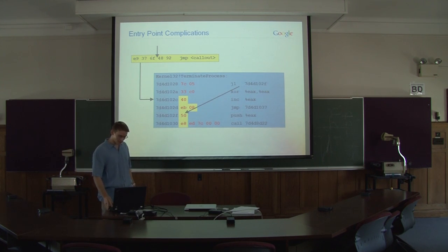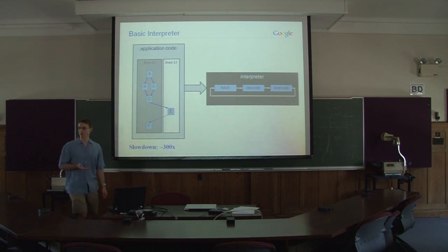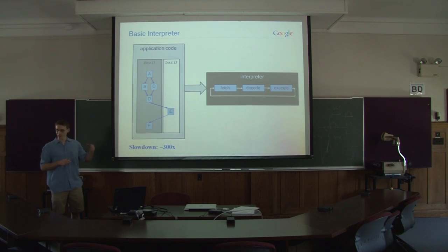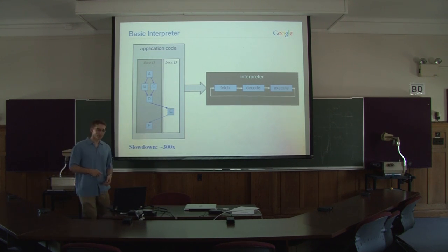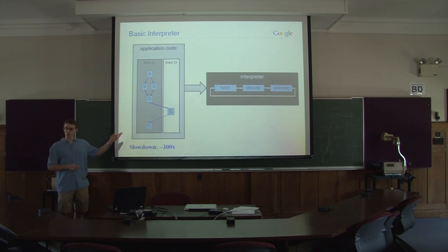You really need some kind of indirection. So maybe the first thing you might think of is having an interpreter. So instead of actually running a program natively, we're just going to emulate everything. We're going to read all the instructions in, emulate all the state, machine state ourselves. And this can work fine to build your tool. It's just going to be really slow. We've got a number down here. 300x. That's the average overhead.